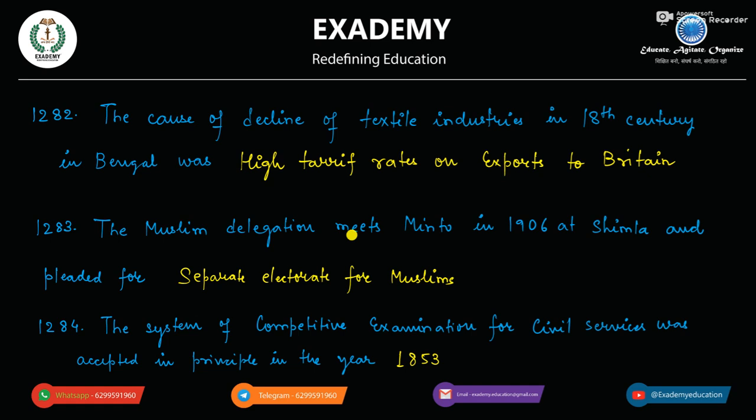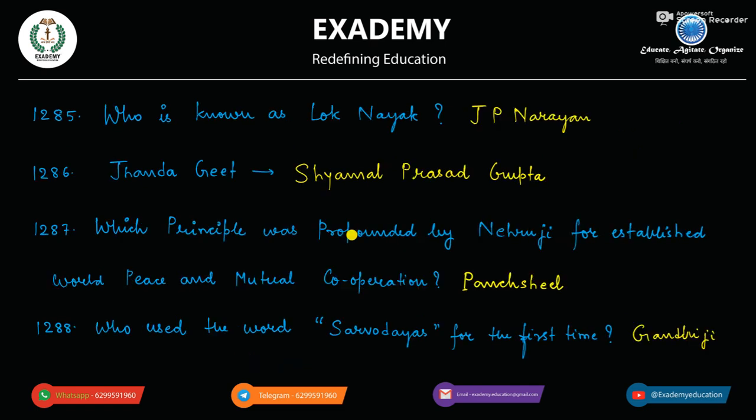The system of competitive examination for civil services was accepted in principle in the year 1853. Yeh system of competitive examination civil services ka — woh kab accept kiya gaya? 1853 mein.